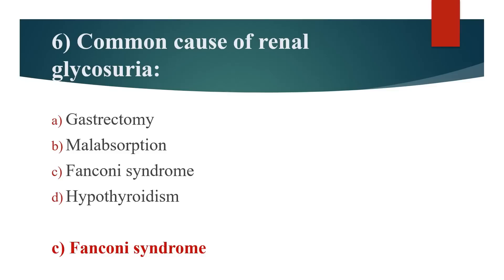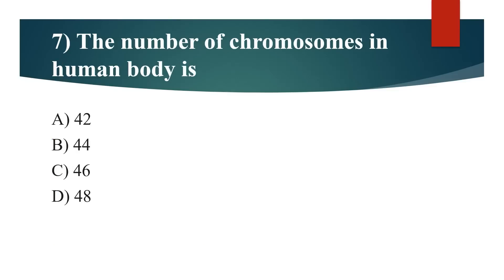Seventh question: The number of chromosomes in the human body? Option A: 42. Option B: 44. Option C: 46. Option D: 48. Answer is Option C: 46, that is 23 pairs.